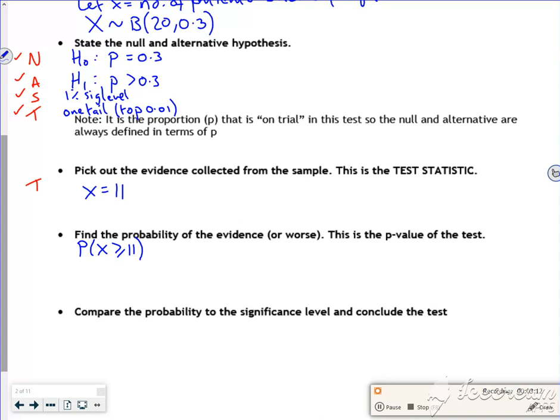So we're just doing that on BCD. So we're doing BCD, lower 11, the upper 20, N 20, P 0.3. So nothing new there, is there? So that gives me a probability of 0.017.